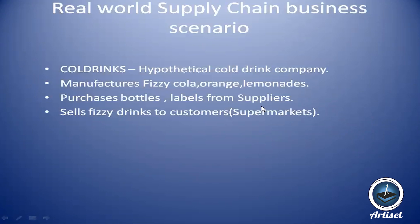To begin with, let's consider a real world supply chain business — a hypothetical scenario. Let's assume a company called Cold Rings, who manufacture cold rings — aerated fizzy drinks. They manufacture in different flavors: cola, orange, lemonade, and others.